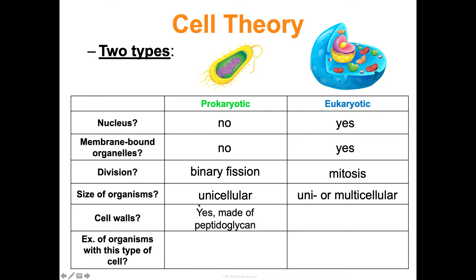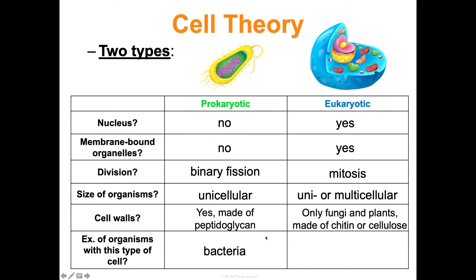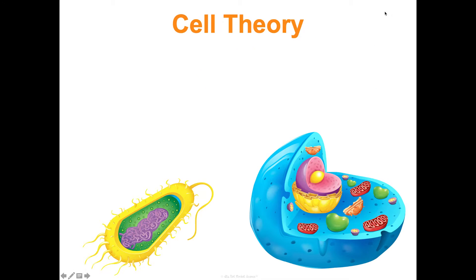Prokaryotes have cell walls — the outermost structure — made of peptidoglycan. Some eukaryotes have cell walls too, but not all. Fungi and plants do: fungi cell walls are made of chitin and plant cell walls are made of cellulose. Examples: bacteria are prokaryotes, and animals, plants, fungi, and protists are all eukaryotes.